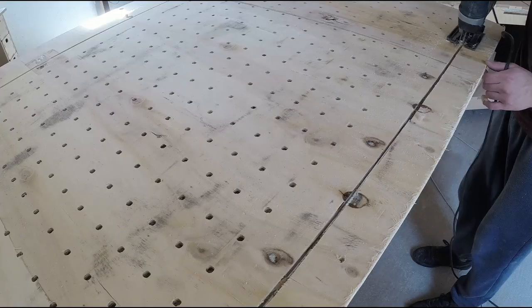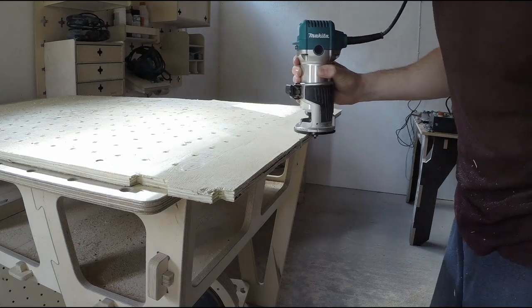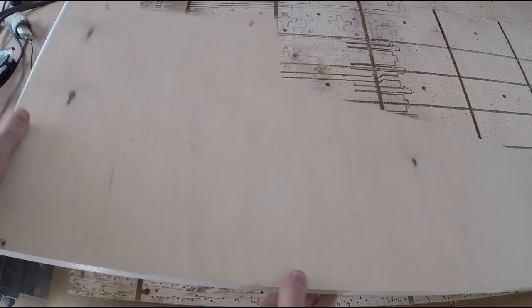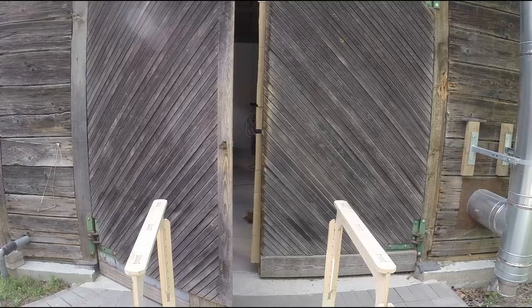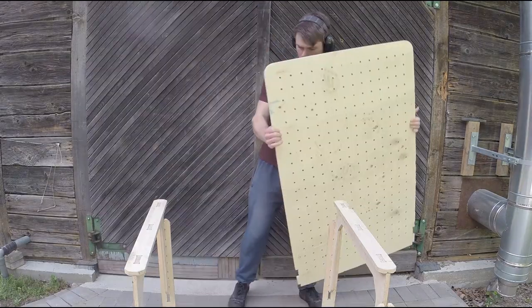Originally the idea was to make them using the same pallet plywood, but since it was delaminating I had to use some of my offcuts. While the CNC was cutting the leg components, I decided to go outside and prepare the wall component for painting.